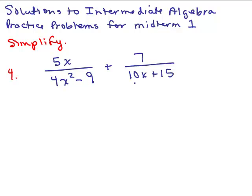But we have two different denominators. So to find the least common denominator, let's factor each denominator. For the first fraction, 5x over, let's factor 4x squared minus 9, that's a difference of two squares.